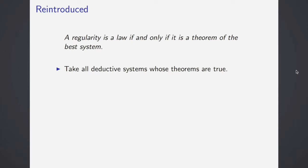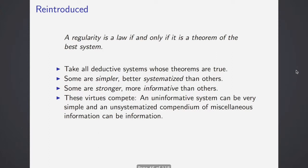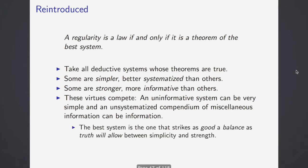An uninformative system can be very simple, an unsystemized compendium of miscellaneous information can be very interesting. The best system is the one that strikes a good balance, as good a balance as truth will allow between simplicity and strength. You take all your laws. You don't want to list every event in the universe that's going to happen, but you also don't want to miss things. You want a nice balance. And how good this is, is going to depend on, he uses this quite a bit. He says how kind nature is.